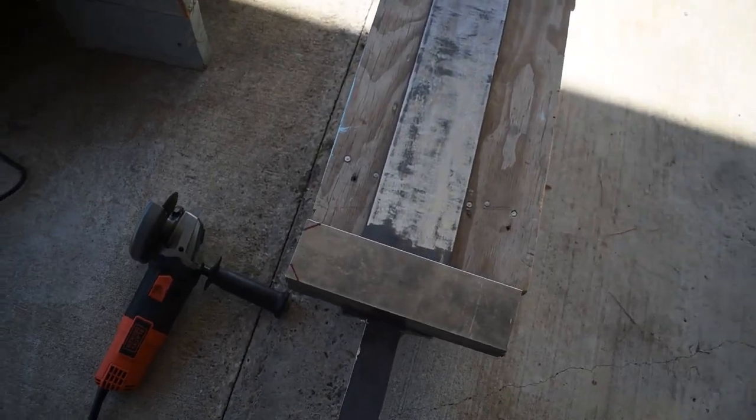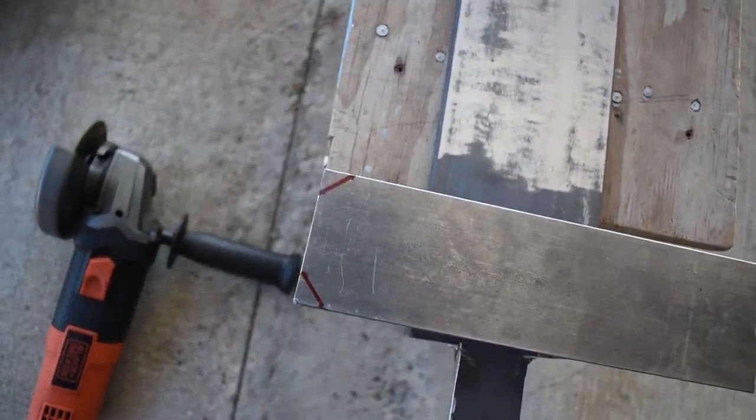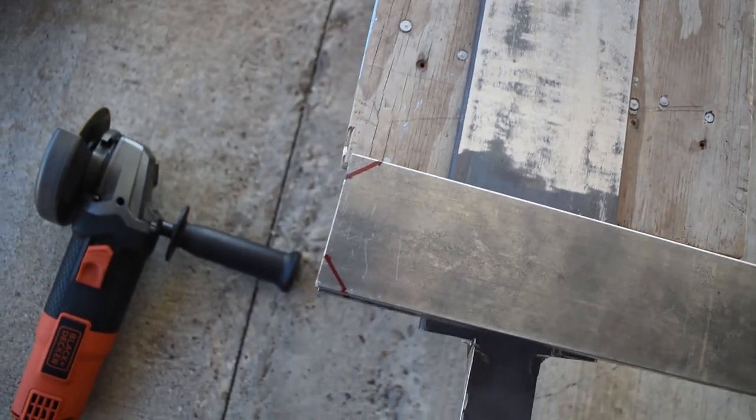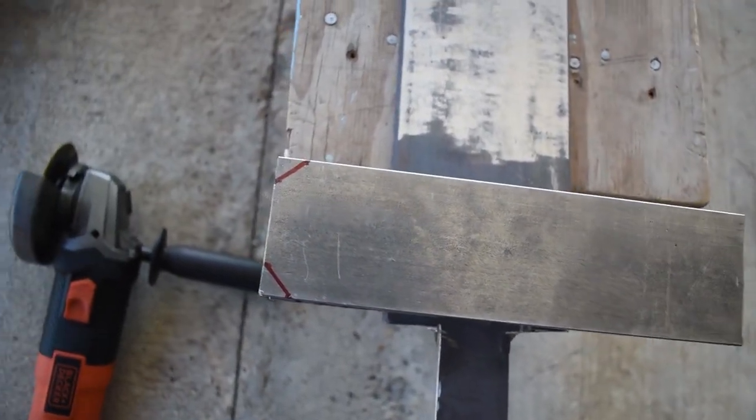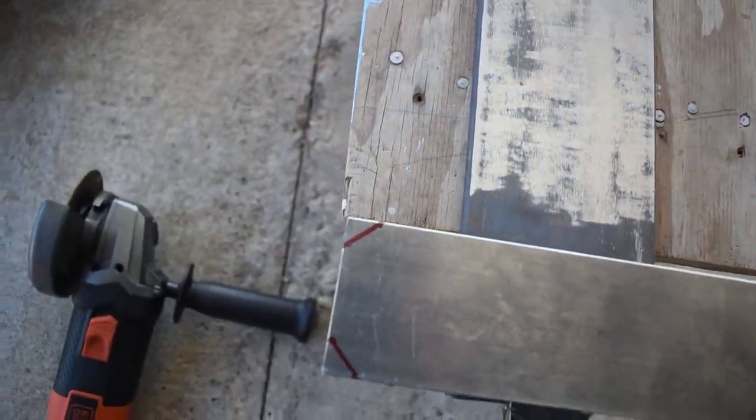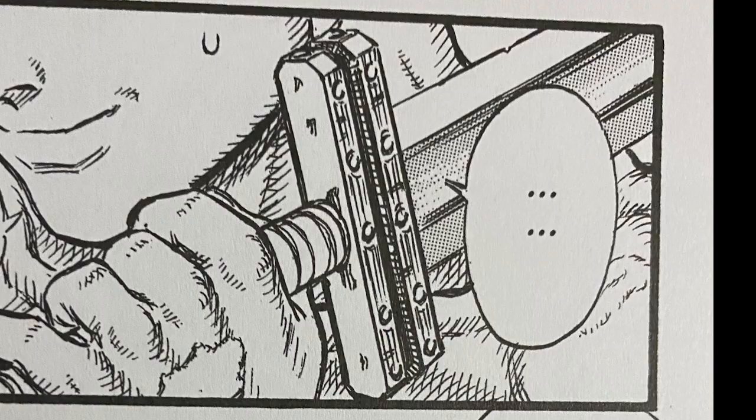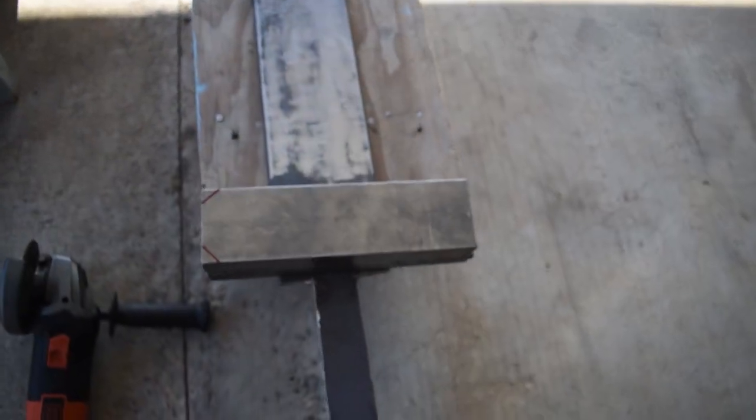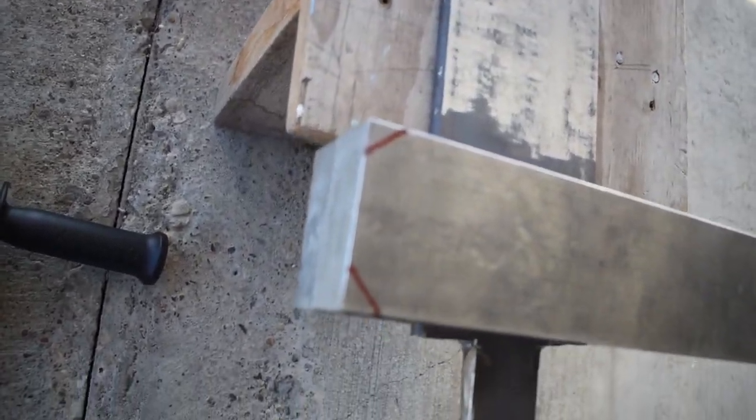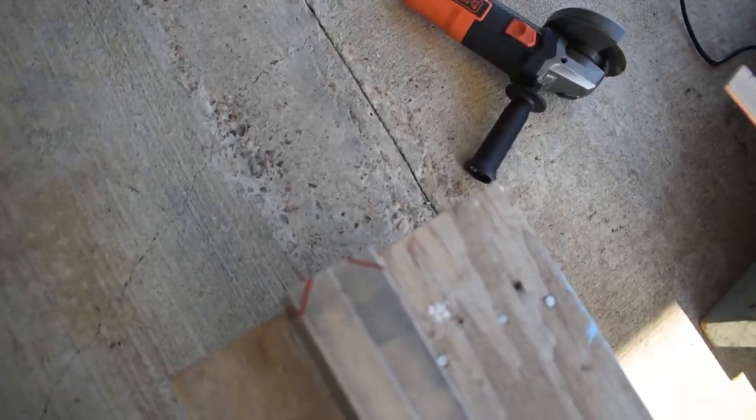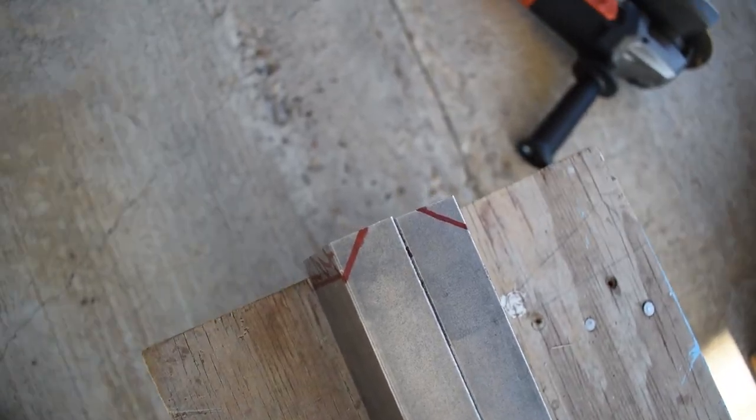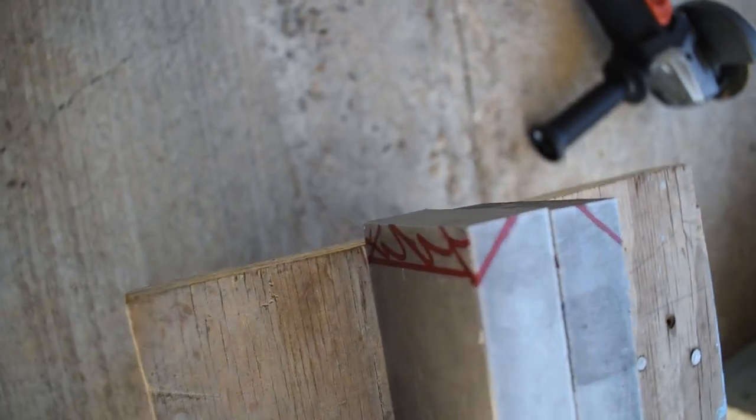I almost made a mistake. I drew this as if I were supposed to cut along those lines, but I flipped the perspective. I'll add a picture to make it make more sense, but I need to redraw the lines so I can cut the corners off. Maybe this makes more sense: the sword is coming out right here, these need to be cut off. This is the top.